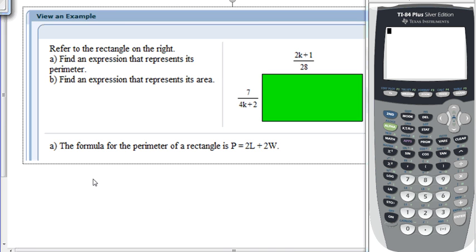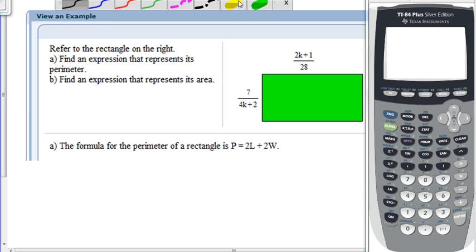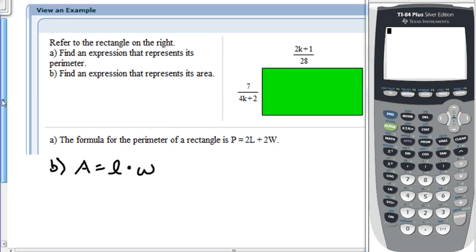We've finished with the perimeter and we still need to find an expression that represents the area of the triangle. So, this is part B. A formula for the area of the triangle looks like this. A equals L times W. In other words, area equals length times width.